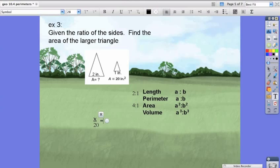So we're going to go ahead and set that equal to the ratio of our areas that we found earlier, which is 4 to 1.